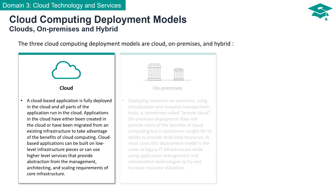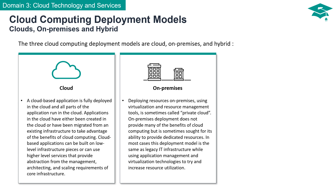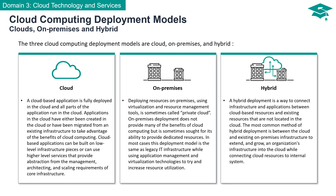On the other end of the spectrum is the on-premises deployment model, where resources are deployed locally — often referred to as private cloud when virtualization and resource management tools are utilized. While this model may not fully harness cloud computing advantages, it provides dedicated resources. Hybrid deployment is a strategic combination of cloud-based resources and existing resources outside the cloud, connecting cloud resources with on-premises infrastructure and enabling seamless collaboration between internal systems and cloud resources.